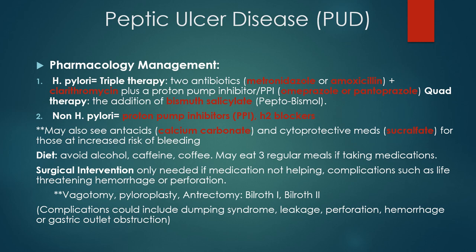If medical management doesn't work, we go to surgical intervention — vagotomy, pyloroplasty, or antrectomy — which are procedures to decrease gastric acid secretion. These have a lot of complications such as infection and bleeding, as with any surgery, and issues with nutrition.